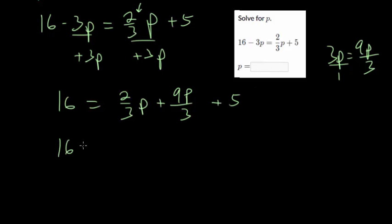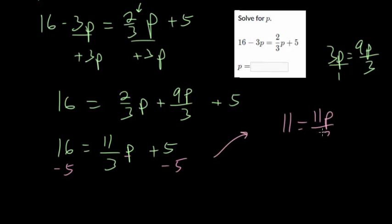So now adding these fractions, I get, well, 2 plus 9 is 11 up top. And the denominator always stays the same once it is the same. So I get 11 thirds P. And then plus 5. So I have to cancel out that plus 5 now. So I can get P by itself. So I will subtract 5 on each side. And what I get is 11 is 11P over 3.